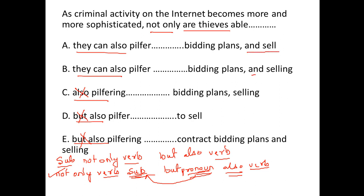Now if you look at the last word, it says 'and cell' versus 'and selling.' 'Selling' is not parallel to 'pilfer' — we have a parallelism error in that choice. In A, 'cell' is parallel to 'pilfer,' which is correct. Hence A is the correct answer.